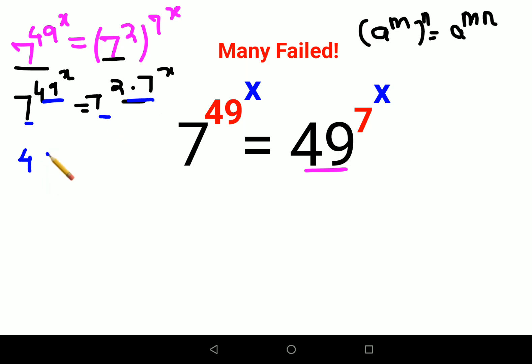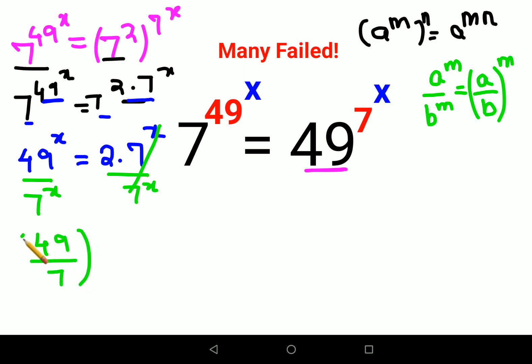So we will say 49 raised to x equals 2 into 7 raised to x. Now since we want to find the value of x, we will divide both sides by 7 raised to x. So this will cancel. And in indices, a raised to m upon b raised to m can be written as a upon b, the whole raised to m. So this can be written as 49 upon 7, the whole raised to x equals 2.